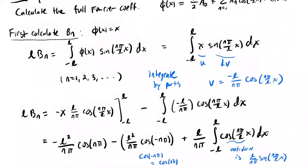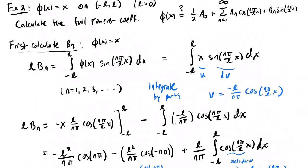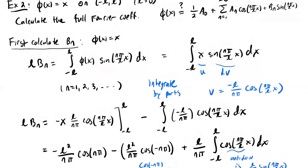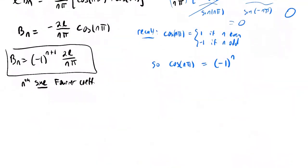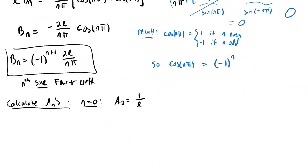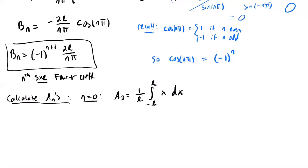We have the sine Fourier coefficients, but we also need the full Fourier coefficients, so we need to calculate the cosine coefficients a_n. Let's first consider the case n = 0. Here a_0 equals one over L times the integral from minus L to L of phi(x) dx, which is just x. You can find the antiderivative and evaluate — this integral is just zero.